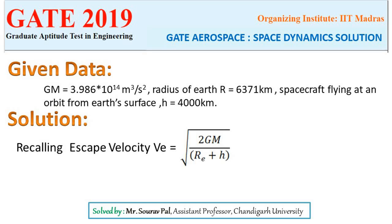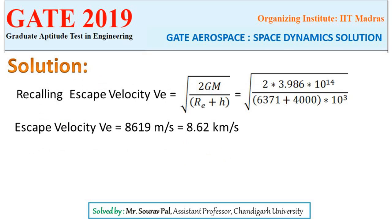Now let's recall the escape velocity formula: root over 2GM divided by (R_e + h). Now substitute the values.